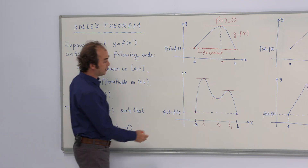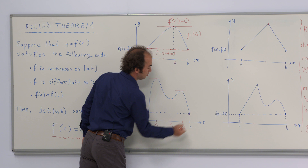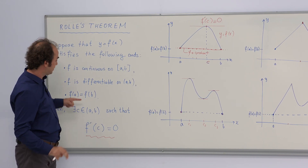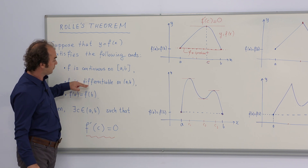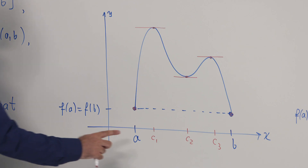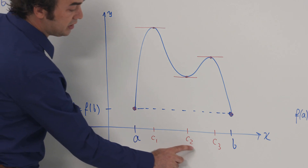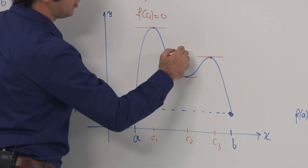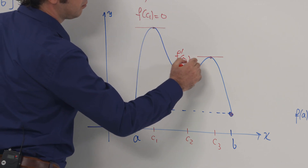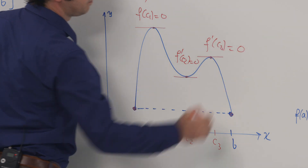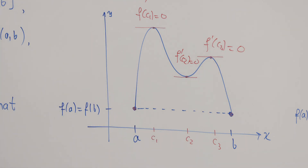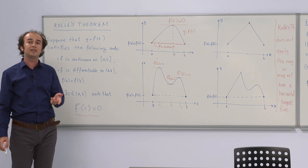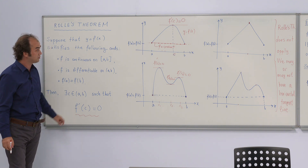Another possible graph is this blue one — again a continuous and differentiable function. In that picture, there are three numbers c1, c2, and c3 at which the first derivative is zero. Don't forget that the theorem is guaranteeing just the existence of one of them. Of course, there may be infinitely many numbers c satisfying that result.